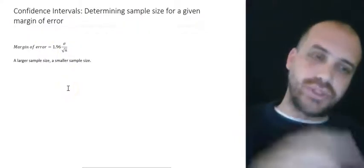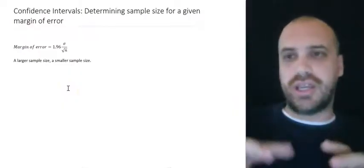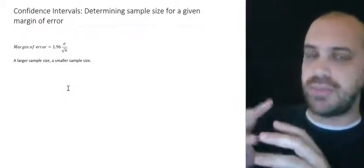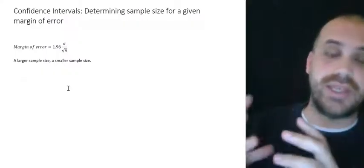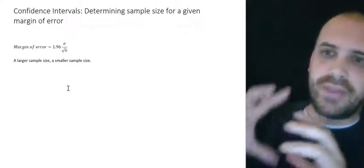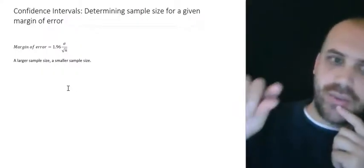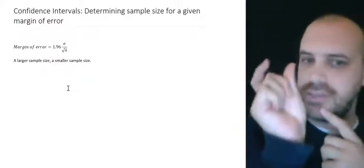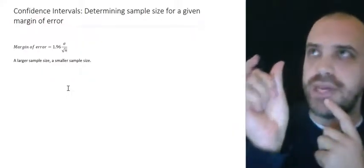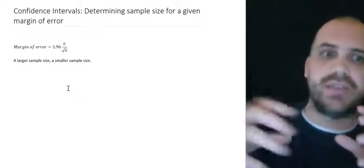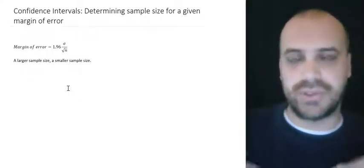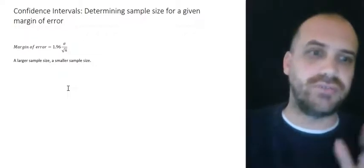So in the real world, when a statistician is deciding how many people they're going to sample or how many things they're going to sample, they do a calculation where they say, I want my margin of error to be this big, so I better select this many things in my sample. So this is a very real world application of confidence intervals.